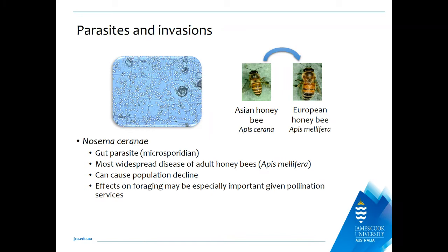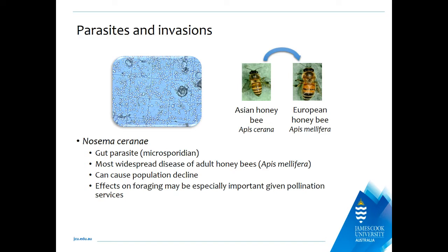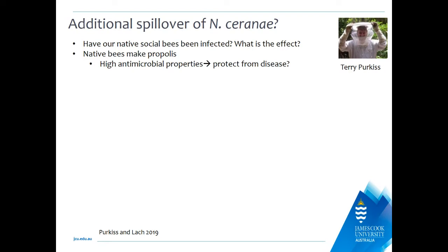It was only when somebody noticed that Nosema stopped decreasing in spring — as Nosema apis typically does with seasonal effects — that they took a closer look and realised it was actually a different Nosema species. Nosema ceranae is now the most widespread disease of adult honeybees. It's not yet present in most of Western Australia, but it is present all over the rest of Australia. It was here before Asian honeybees arrived, so it likely came in through imports of Apis mellifera.